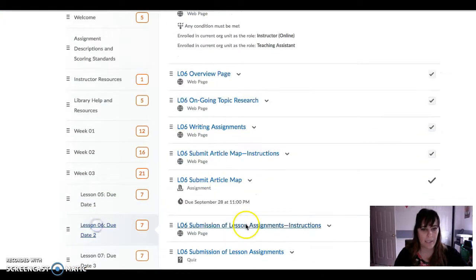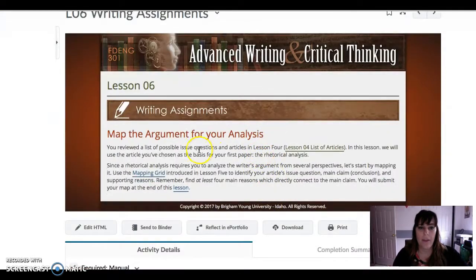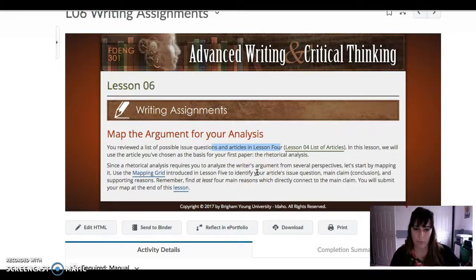Then when you get to lesson 6 you'll be doing maps again but you're going to map the article that you chose from that list in lesson 4. So you're gonna go back to the mapping grid and remember you're only mapping what's in the red boxes, that's the same for this assignment.